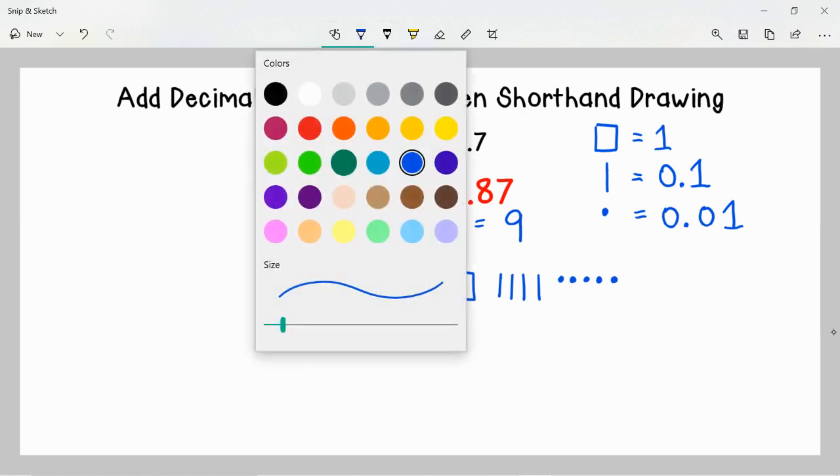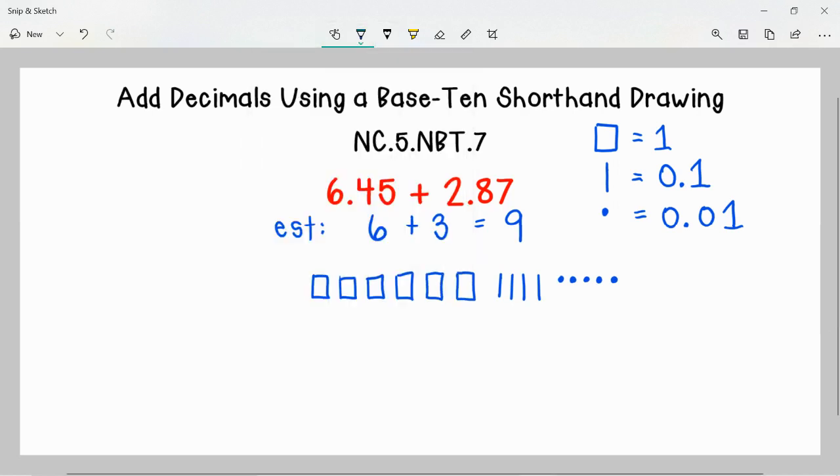I'm going to switch colors. And now I'll show the 2.87. You don't have to switch colors when using a Base-10 shorthand drawing. I just think it will be helpful for us to see in this example. So let's show 2.87. First, that's made of 2 wholes. I'm just going to put this one right underneath here. Now 8 tenths. So let's go ahead and show 8 tenths.